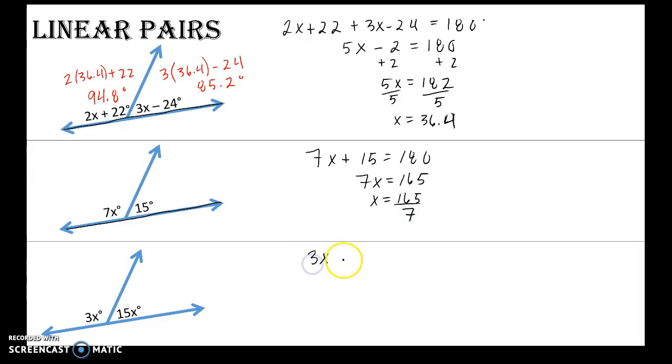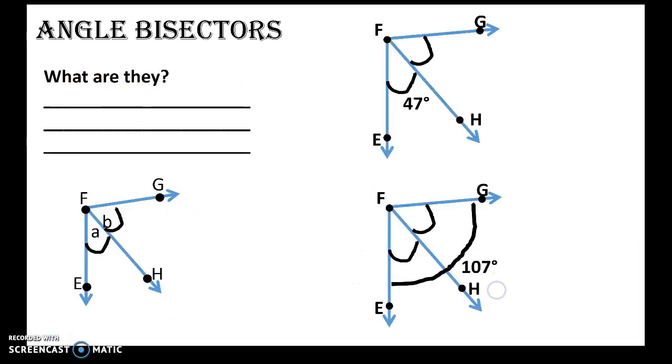And then lastly, 3x plus 15x would equal 180 degrees. Okay, the adjacent angles form a straight line. Combining like terms, 18x equals 180, so it would make x equal to 10. All right, so at any time you could be, you would need to find x, and then we know we could plug it in to find what the individual angle measures are as well.